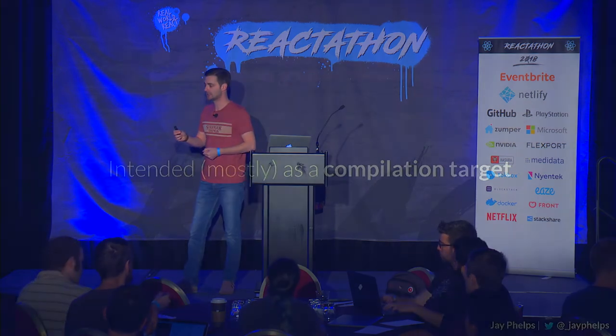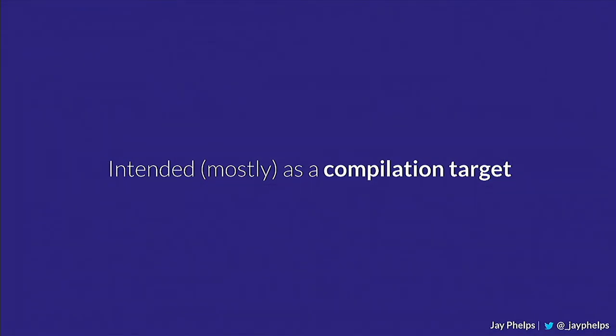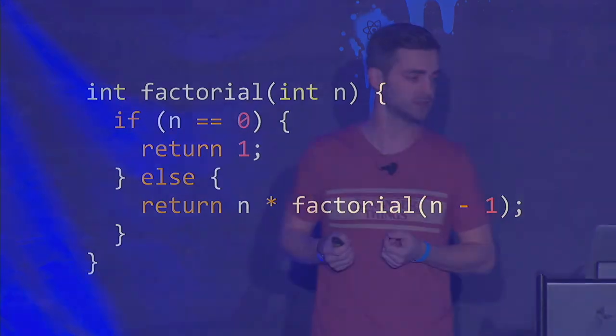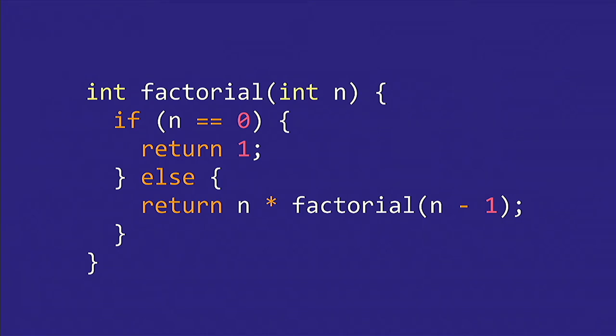The next part is that it's a compilation target, which means you mostly won't be writing WebAssembly by hand. As a long-term play, it's intended as basically an implementation detail — you really don't need to care how WebAssembly works under the hood. But let's look at a very simple example. This is C or C++ code. If you've never written C or C++, hopefully it's not too intimidating — basically it's JavaScript where there's a type annotation.